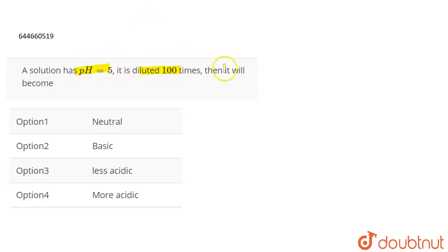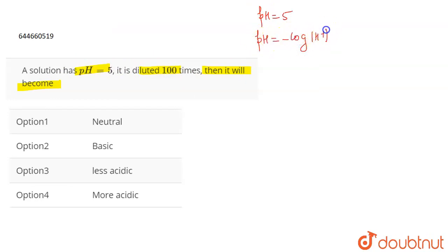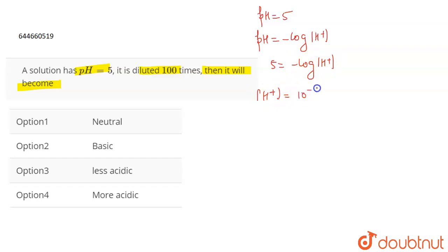The question is: a solution has a pH equal to 5, and it is diluted 100 times. What will it become? We have pH = -log[H⁺] = 5, so the concentration of H⁺ becomes 10⁻⁵ molar.